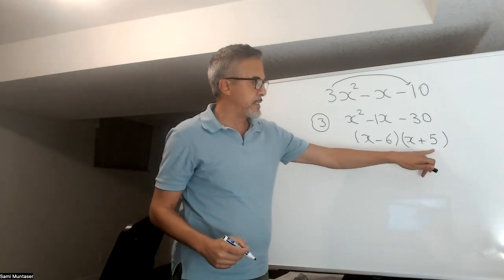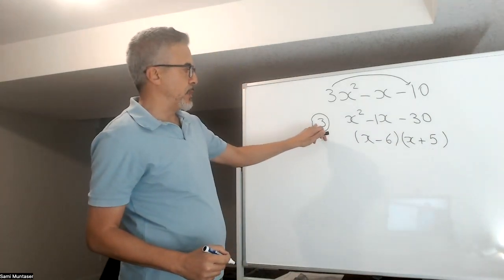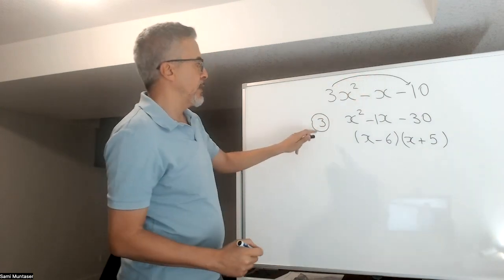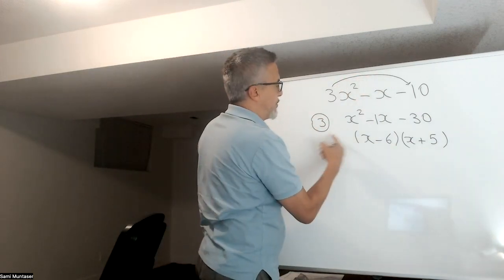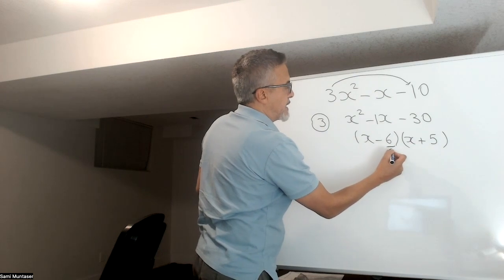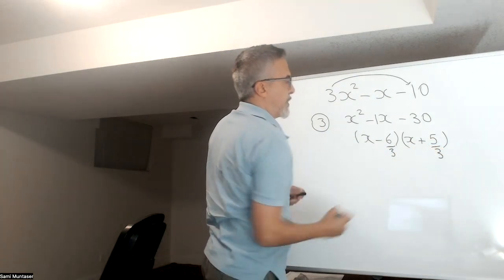So once you factor this, now we're going to come back to this 3 that we multiplied into the 10 there. So what I do, I take the 3 here, I divide the 6 by 3, and I divide the 5 by 3.